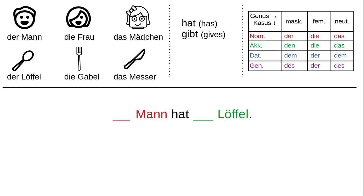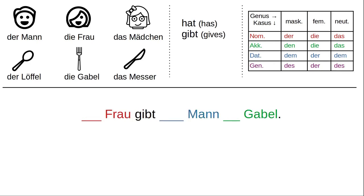Fill in the articles for this sentence: 'The man has the spoon.' Man is the subject; spoon is the direct object. Pause the video and give it a try. Here's the answer: Der Mann hat den Löffel.